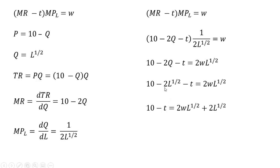Moving minus 2L to the one-half power over to the right-hand side. Factoring out 2L to the one-half power on the right-hand side. Dividing through by wage plus 1.